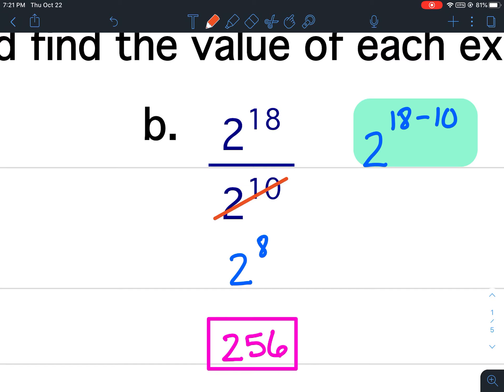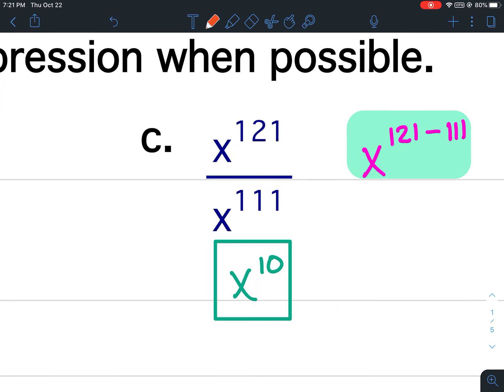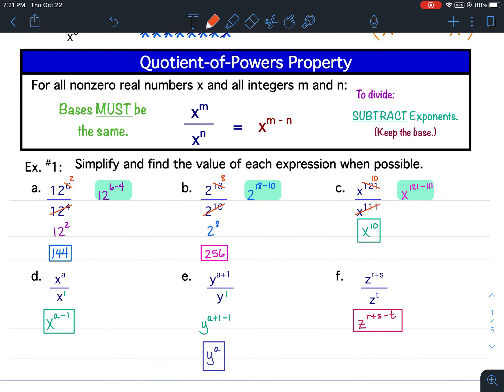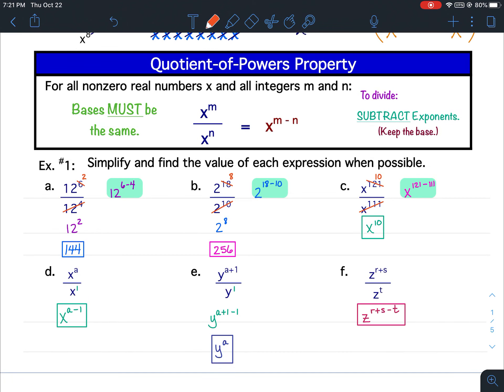X to the 111, that's the smaller exponent. I completely cross it out. 121 minus 111 is 10. That's how I got X to the tenth. Now for these problems that are smaller you don't really need to do that, but we're going to get into bigger problems where this is going to be a must.